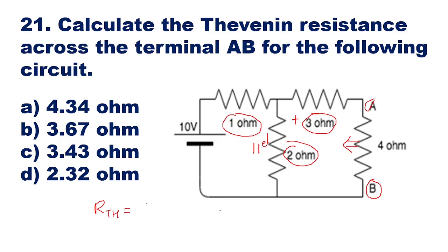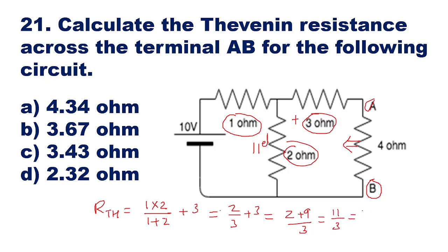The 1 ohm and 2 ohm resistors will come in parallel, and this parallel combination will come in series with the 3 ohm resistor. So RTH = (1×2)/(1+2) + 3 = 2/3 + 3 = 2+9/3 = 11/3 = 3.67 ohms. The answer is option B, 3.67 ohms.